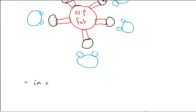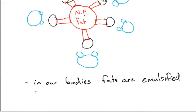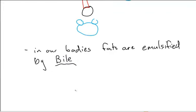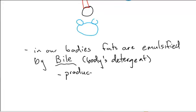And in our body, fats are emulsified by a substance called bile. Basically, it's the detergent of the body, which is produced by the liver and stored by the gallbladder.